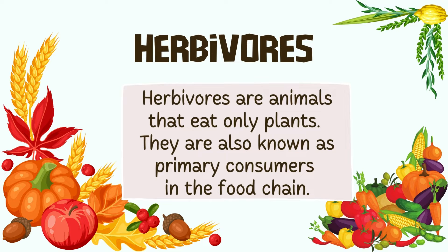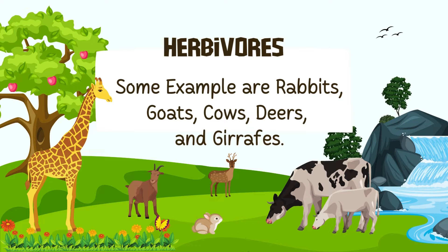Herbivores are animals that eat only plants. They are also known as primary consumers in the food chain. Some examples of herbivores are rabbits, goats, cows, deers, and giraffes.